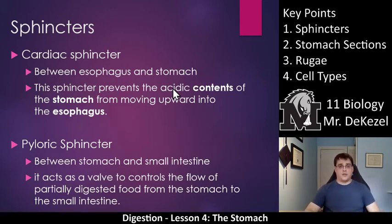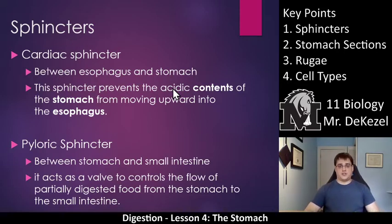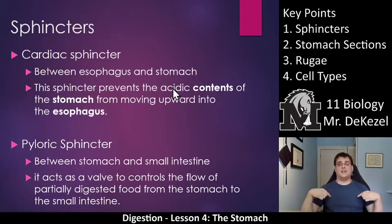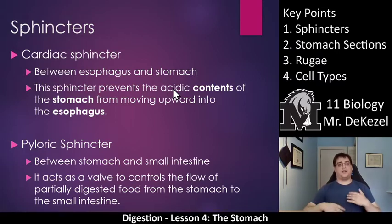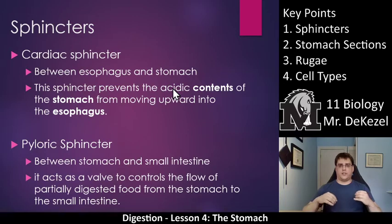So the cardiac sphincter is between the esophagus and the stomach. This sphincter prevents the acidic contents of the stomach from moving upward into the esophagus, and releases food into the stomach. What it is primarily there for is to prevent your stomach contents from going up into your esophagus and causing vomiting — it is the first line of defense. A lot of people get confused thinking the cardiac sphincter's job is to regulate food going into the stomach; that's only partially true. Its true job is to prevent acidic contents from going up into the esophagus.